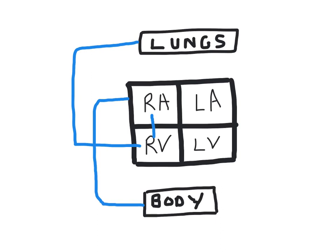At the lungs, gaseous exchange takes place and the blood becomes oxygenated — oxygen attaches to the red blood cells via haemoglobin, the protein in red blood cells, to become oxyhaemoglobin. The blood then travels from the lungs — shown in red because it's now oxygenated — into the left atrium, drops down through the mitral valve, and is pumped out through the aortic valve to the working muscles.